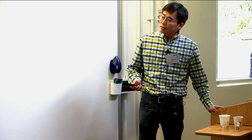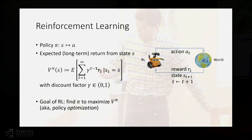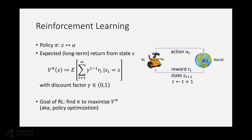Reinforcement learning is about finding a policy to maximize long-term reward. We have an agent or robot taking actions to affect the world, and in return we receive reward — an immediate one-step reward — and then this interaction repeats. Over time, we look at the expected long-term return from a certain state, called the value of a state: the total discounted cumulative reward for the future by following that policy. The goal of RL is to optimize the policy to maximize this value function — this step is called policy optimization.